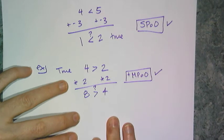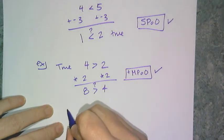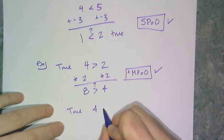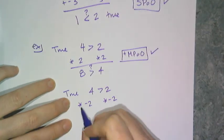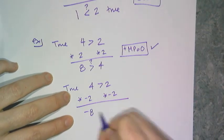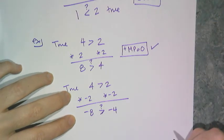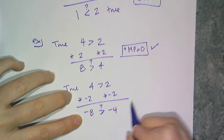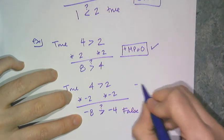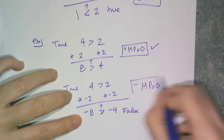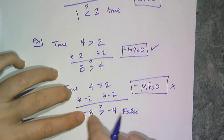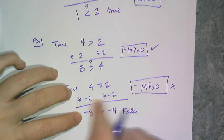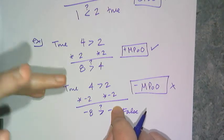Now let's check negative multiplication. Starting with 4 is greater than 2 and multiplying both sides by negative 2, I get negative 8 and negative 4. Is that order still true? Is negative 8 greater than negative 4? No, it's not. So negative multiplication property of order does not work as written. When I multiply both sides by a negative number, the inequality is not true anymore.